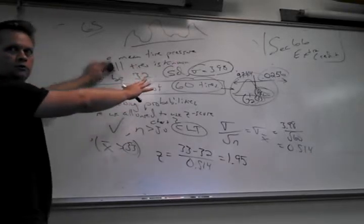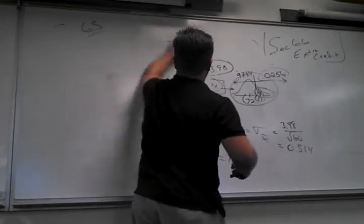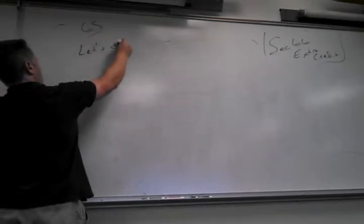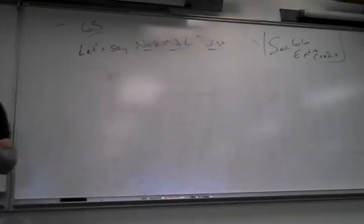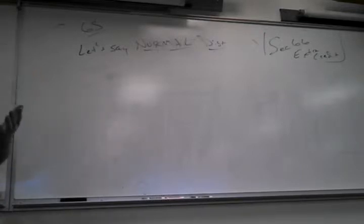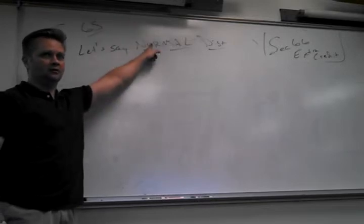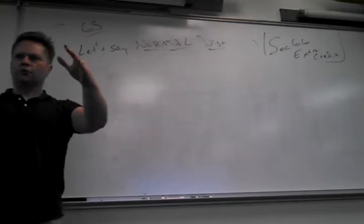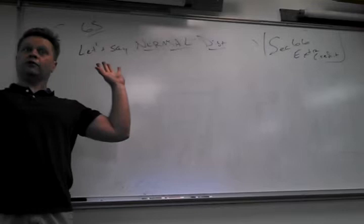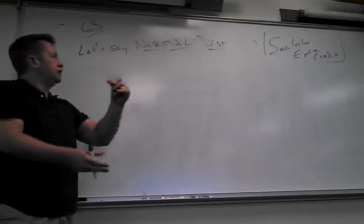If I know the distribution is normally distributed, what does my sample size have to be? One is fine — because it's already normal. The central limit theorem says no matter what it looks like, once you hit 30 it's normal enough. If it's already normal, you're only making it more normal by taking samples — so you only need a sample size of one.